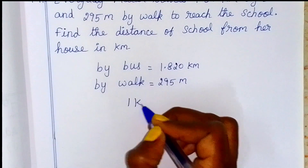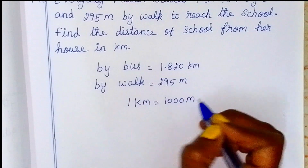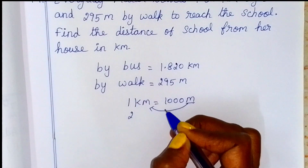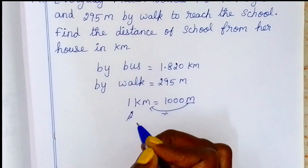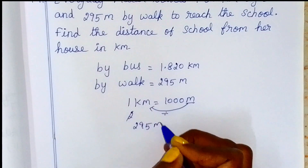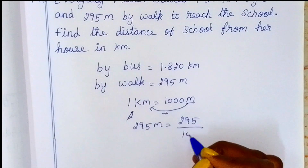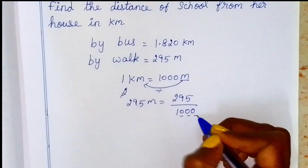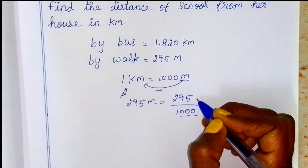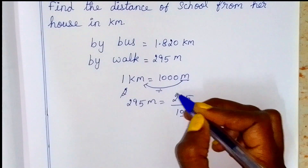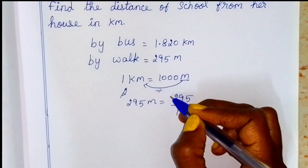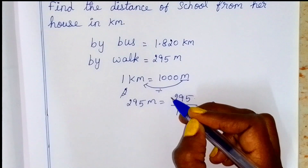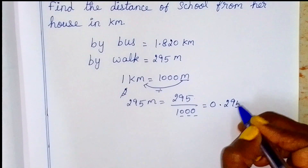If we know the relation here, 1 kilometer is equal to 1000 meters. Now the number is in meters. So meters equal to kilometers — divided by 1000. So 295 meters equals 295 by 1000. So 1000 is equal to 1 kilometer. We have to move the decimal point 3 numbers back, so here it is 1, 2, 3 — decimal point is here. So 295 meters equals 0.295 kilometers.